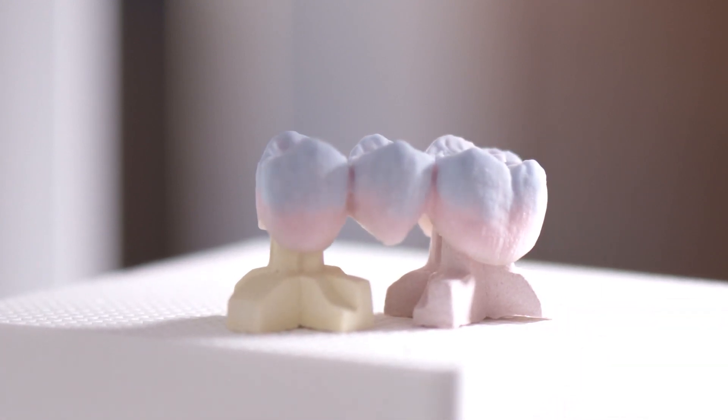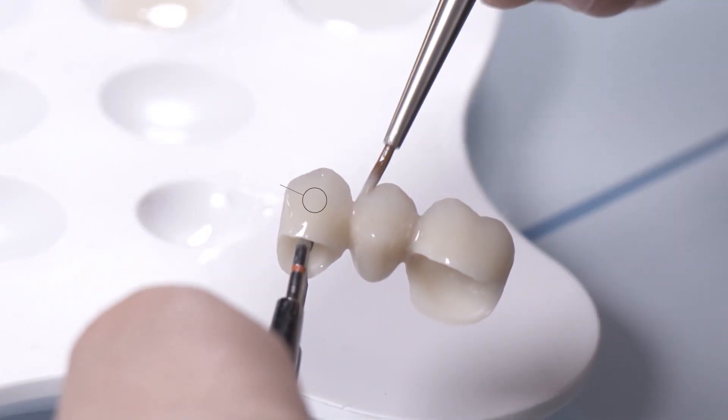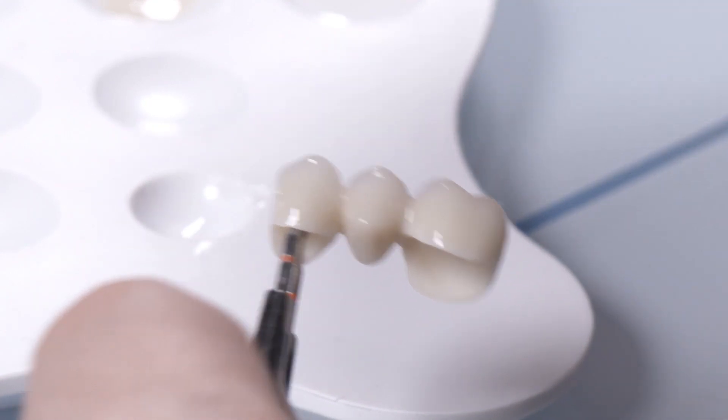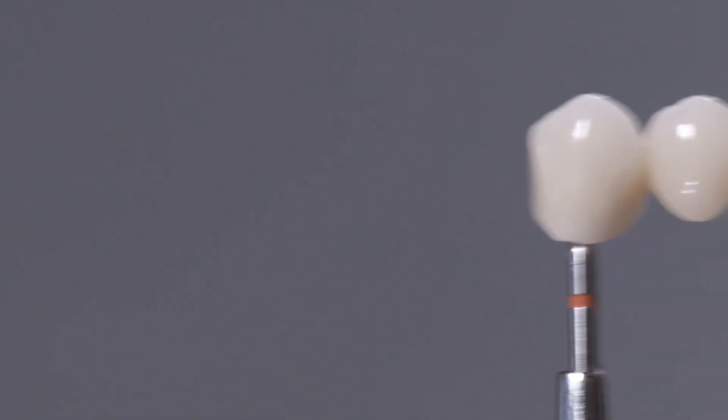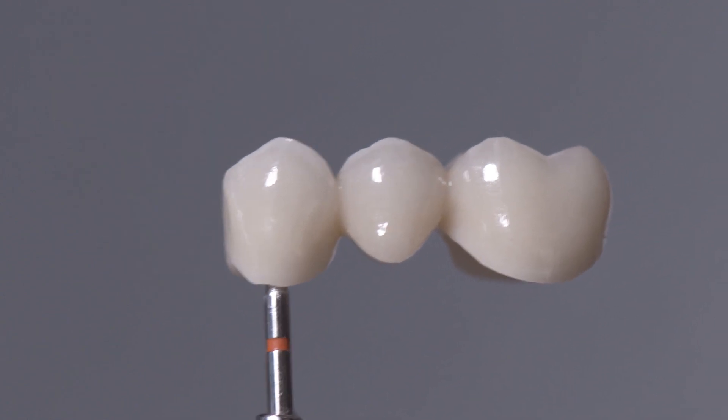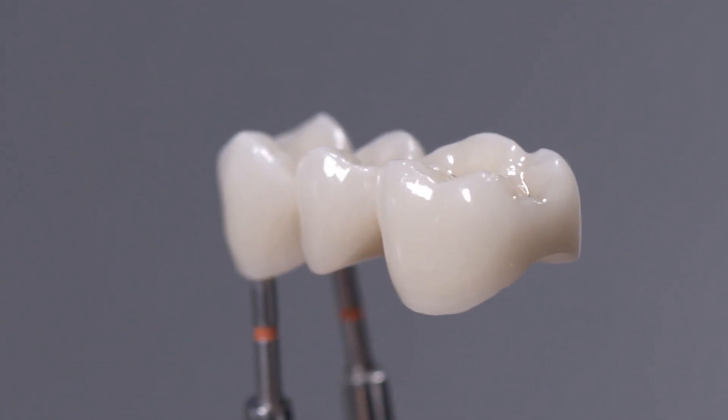In a second ceramic firing, the restoration is finished using only Dentin A2 and Enamel E1. Customization with stains was deliberately omitted in this case. The Circon HD restoration is finally glazed with High Flu Universal Overglaze. The result, a restoration that matches the desired target shade perfectly.